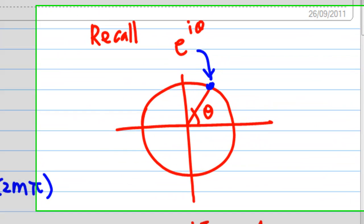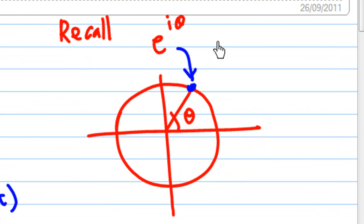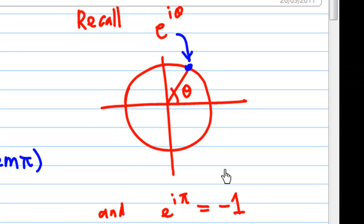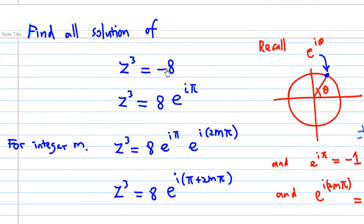If you recall that e to the i theta is located at a point where the argument from the x-axis is theta and the distance from origin is 1. So what is e to the i pi now? e to the i pi is actually minus 1 because what is pi? The angle pi will be here, 180 degrees. So e to the i pi will be this point where this is 1 from the origin, which is why the point is minus 1. So 8 times minus 1 you get minus 8.